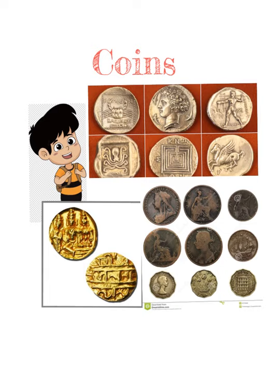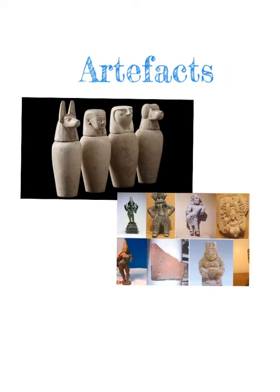Some of the earliest coins have symbols punched on them. The later coins depict the images of kings, gods, and goddesses, and also mention the names of kings and the date of their reign. Thus coins help historians to reconstruct the unknown history of several ruling dynasties.